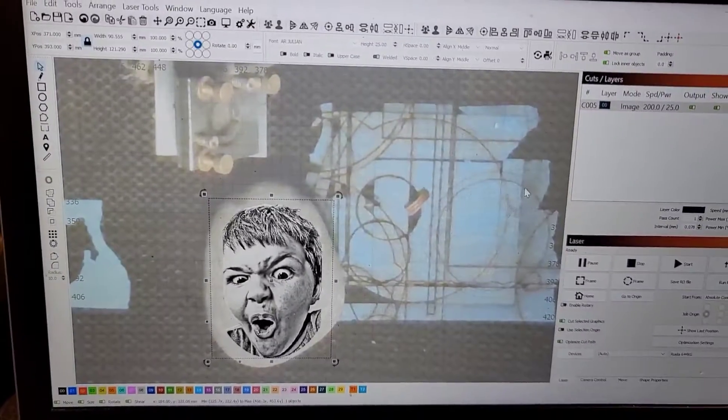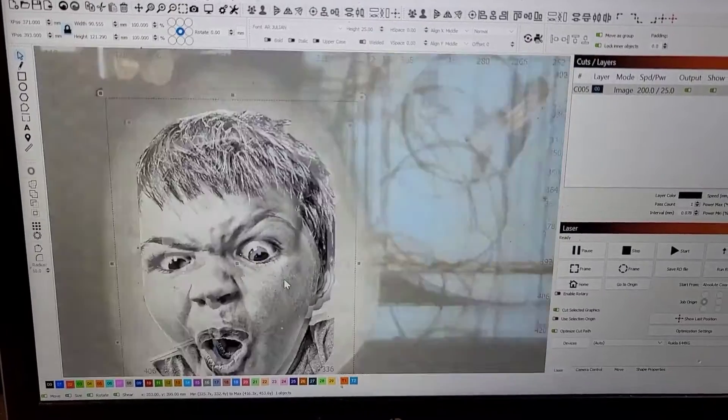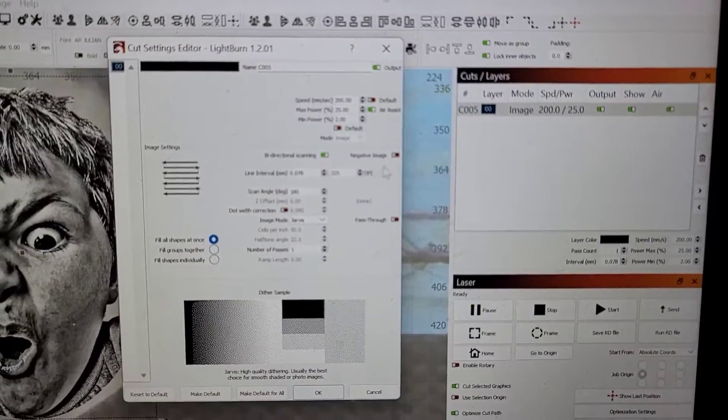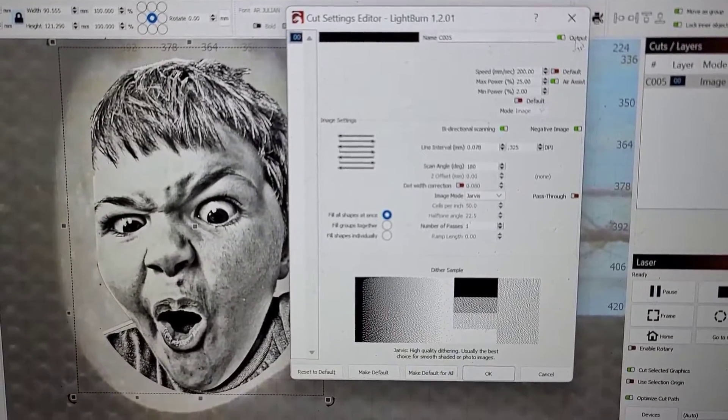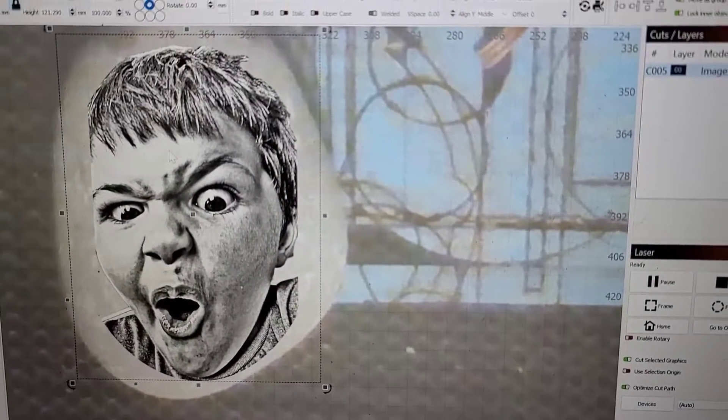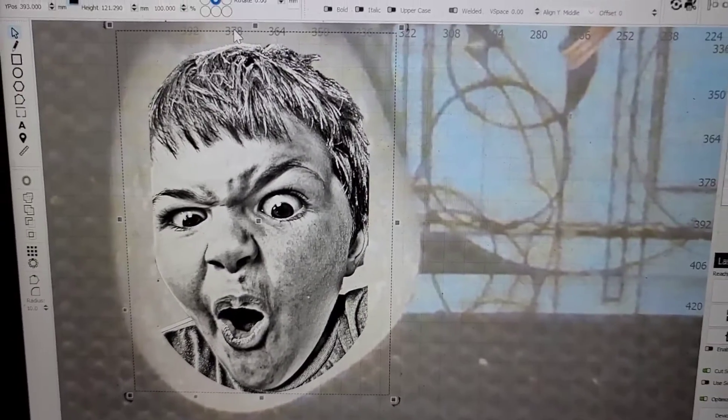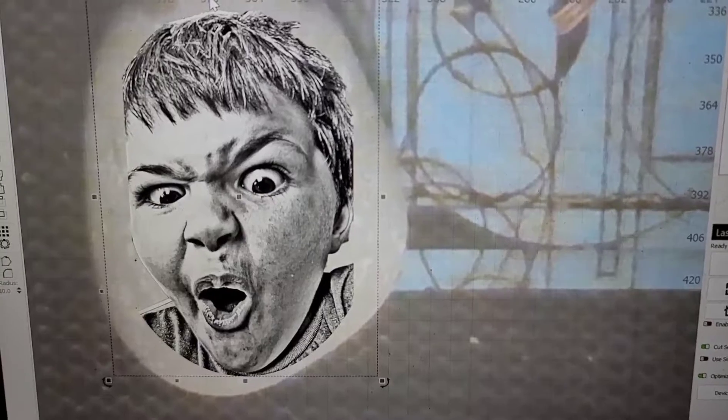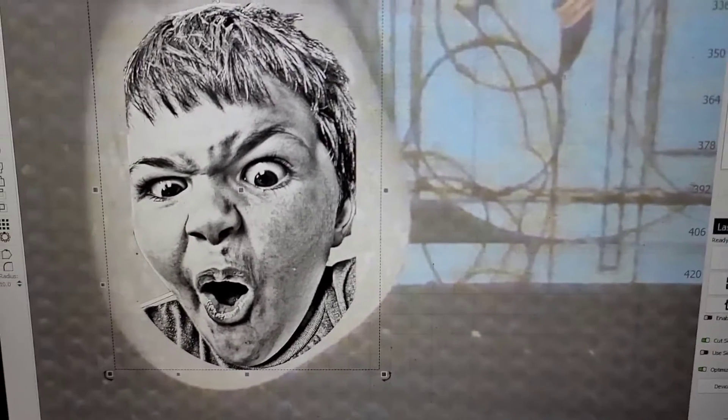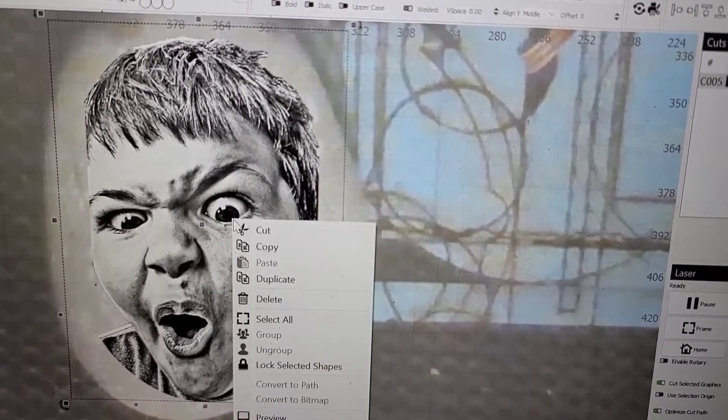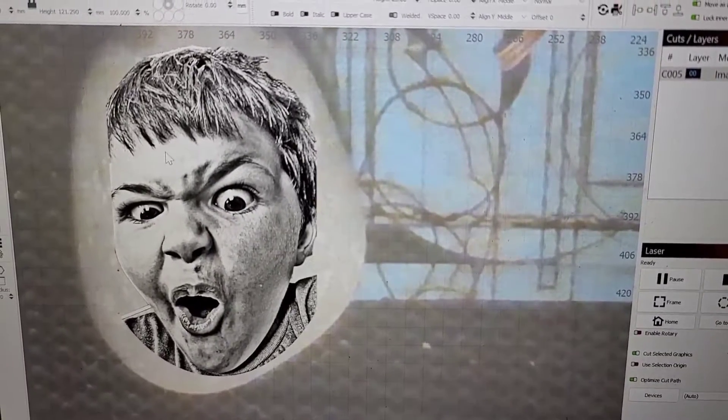While we're waiting on that paint to dry we're going to go back into Light Burn and we're going to change a couple things. We're going to open this layer back up and we're going to change this to a negative image. What that means is it's going to go through and where the white is is where it's actually going to laser and it's going to leave the black areas alone. The reason why we want to do that is the paint is a dark surface and when you engrave you're exposing the lighter surfaces. So you want to make sure that what you're engraving is brighter than your surface. It's just reverse.